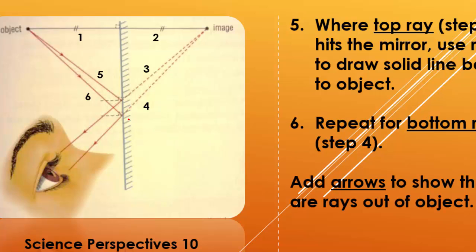Now, make sure you add some arrows because light is really coming out of the object, it's hitting the mirror, and it's going into the eye.